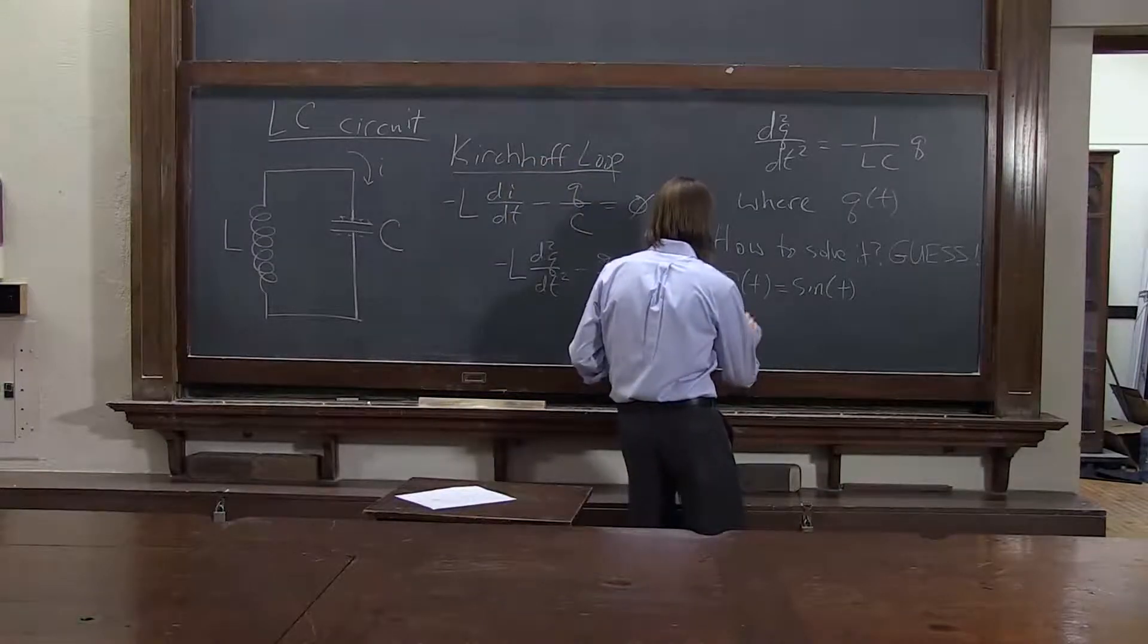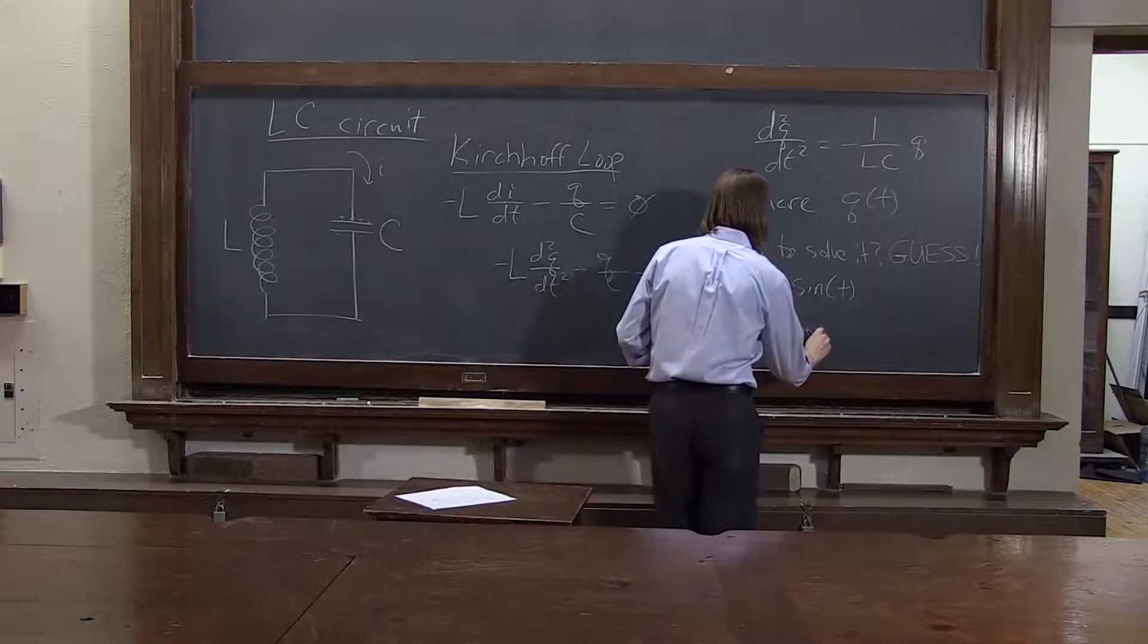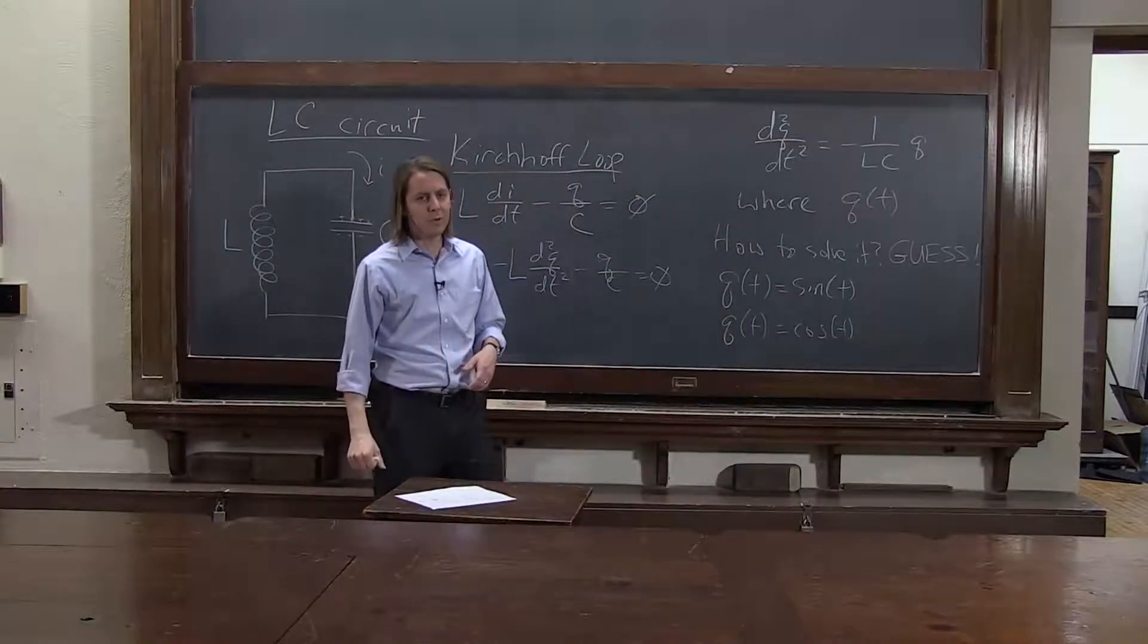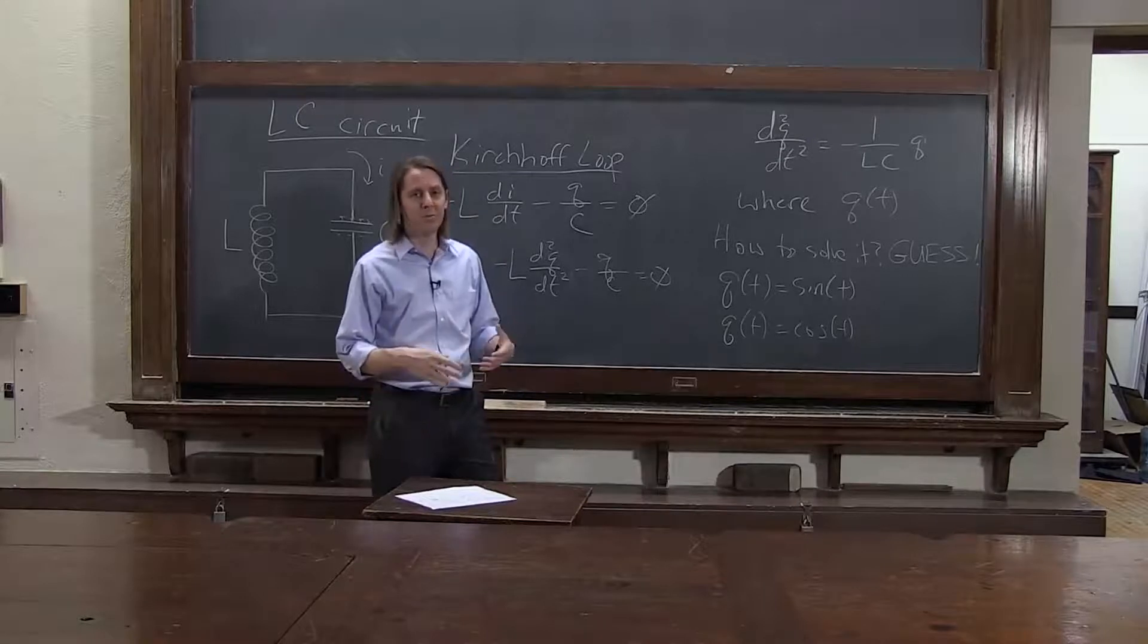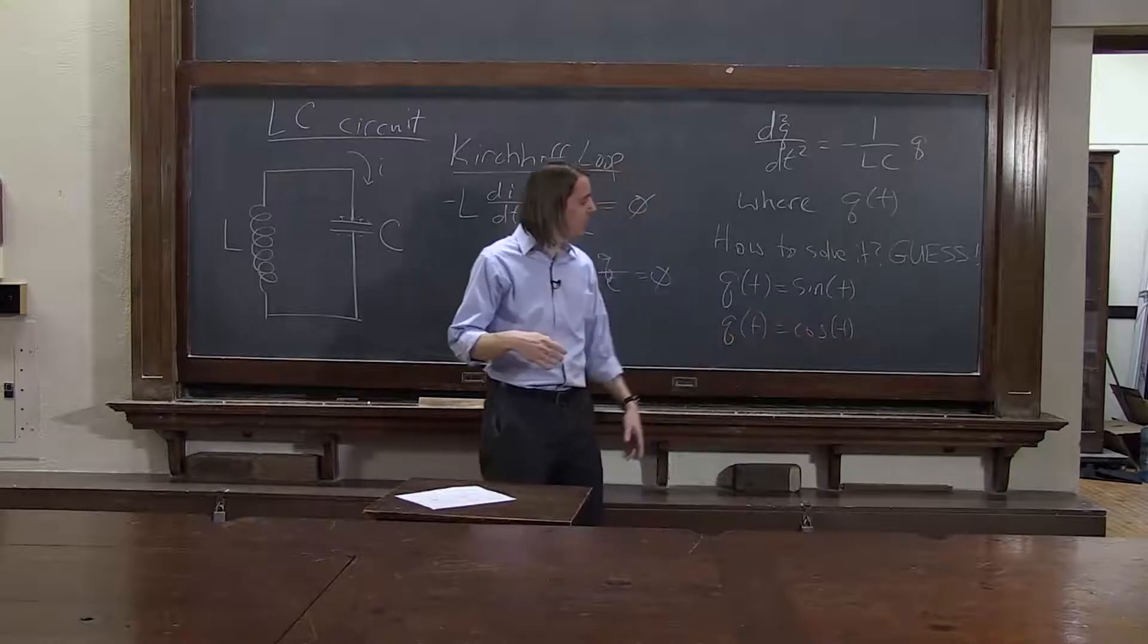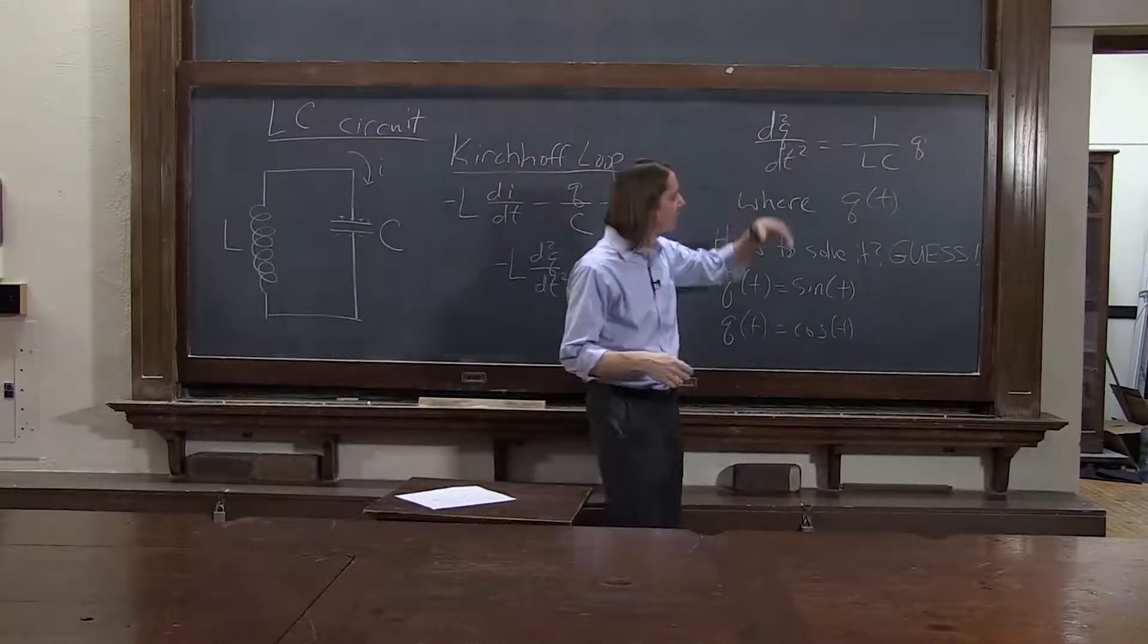Another, well, if sine does it, cosine does it. That's a function that's equal to itself, to its own second derivative to within a constant. The derivative of cosine is negative sine. The derivative of negative sine is negative cosine. And they even bring in the negative sign. How convenient.